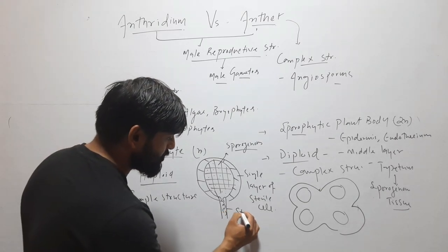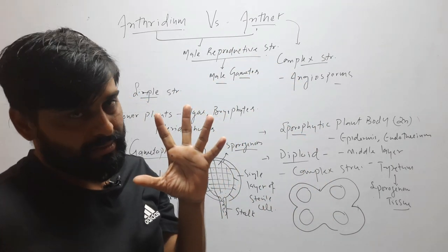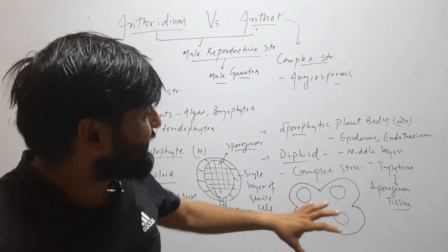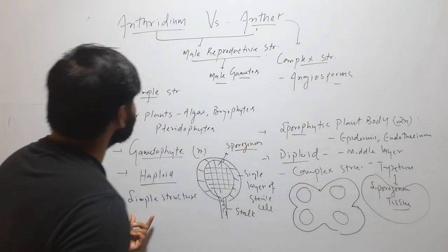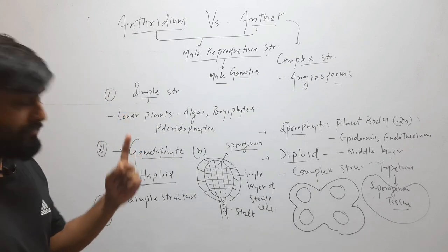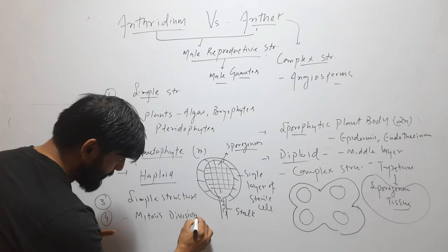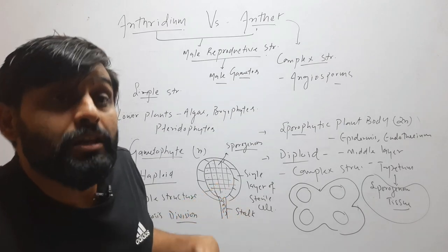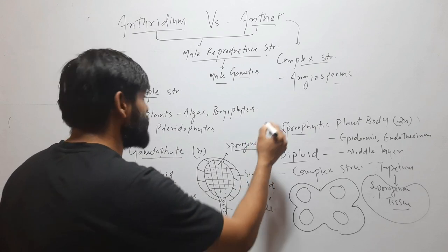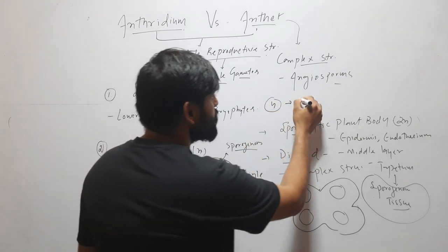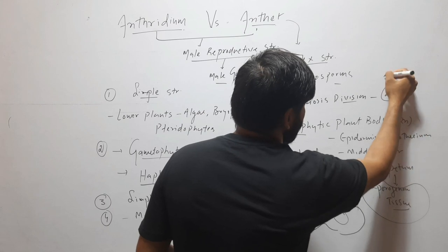To compare: antheridium has a simple stalk with a globular body, whose outer layer is a single jacket and inside is sporogenous tissue. The anther has epidermis, endothecium, middle layer, tapetum, and then sporogenous tissue. In antheridium, male gametes are always formed by mitosis because the sporogenous tissue itself is haploid. In the anther, male gametes are formed by meiosis because the sporogenous tissue is diploid — it divides by meiosis to form haploid male gametes.